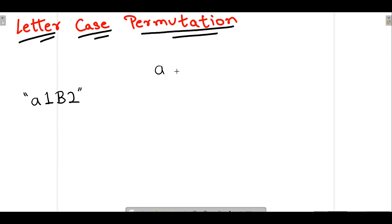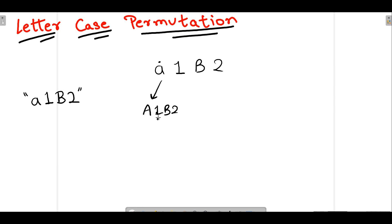So let's see how we find the letter case permutation for the string 'a1B2'. We iterate over the string, and if we find a character that is a letter, we change its case to create a new string, then do this for all remaining characters recursively. Starting at the first character — it's lowercase 'a' — so we convert it to uppercase, giving us 'A1B2', then move to the next character.